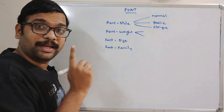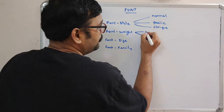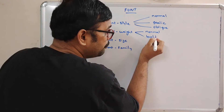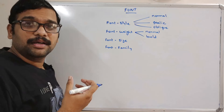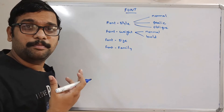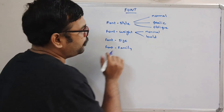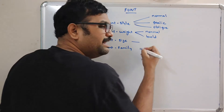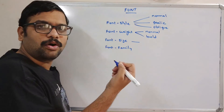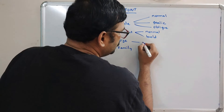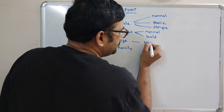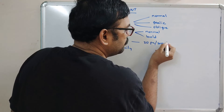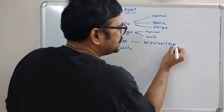Coming to font weight, it has two values: one is normal and the second one is bold, so we can apply a bold type of font. The font size can be mentioned in terms of pixels or EM — we have to give values like 20 pixels, 30 pixels, or 50 pixels.